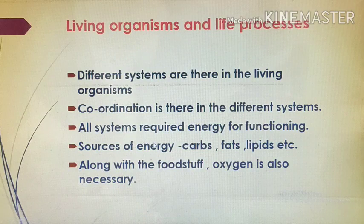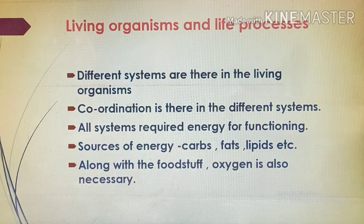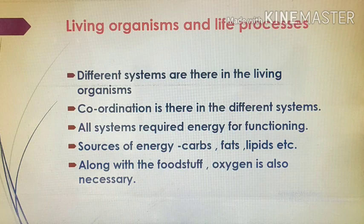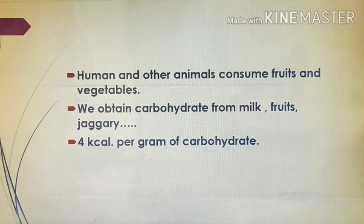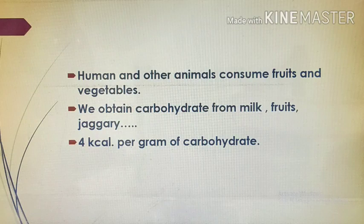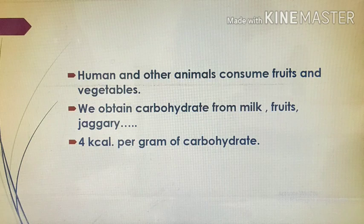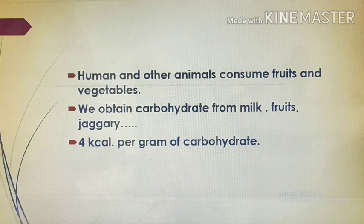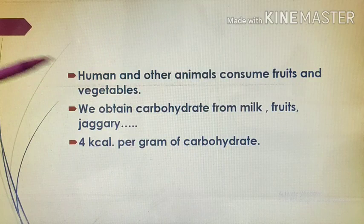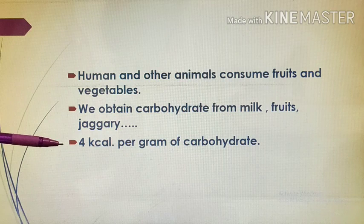Carbohydrates, fats, and lipids are the sources of energy. We get these through the food we eat. Along with food, oxygen is also necessary for energy production in living organisms. Humans and other animals consume fruits and vegetables to get energy, vitamins, and minerals. We obtain carbohydrates from milk, fruits, jaggery, and sweet items. The energy obtained from carbohydrates is 4 kcal per gram.